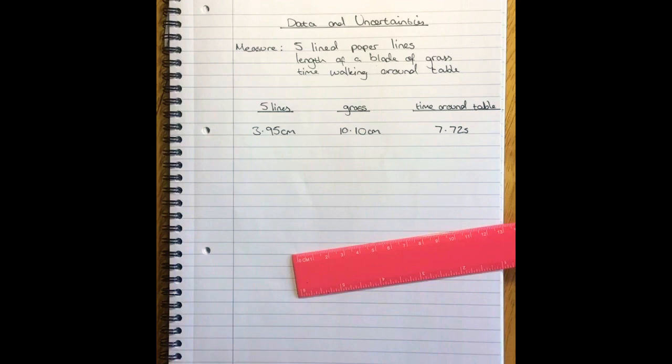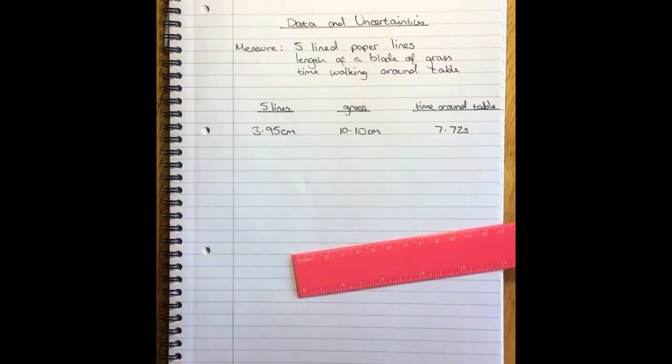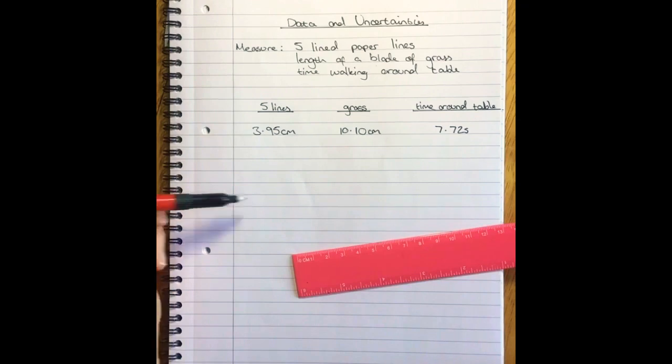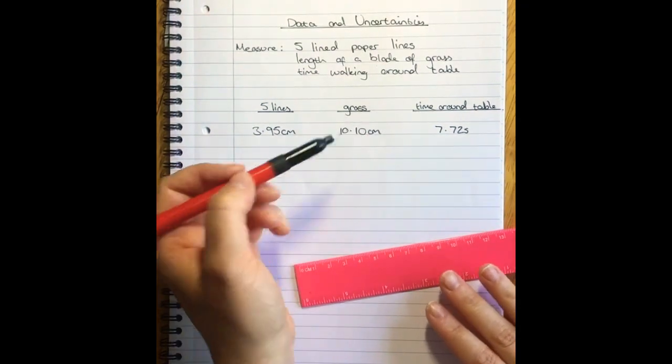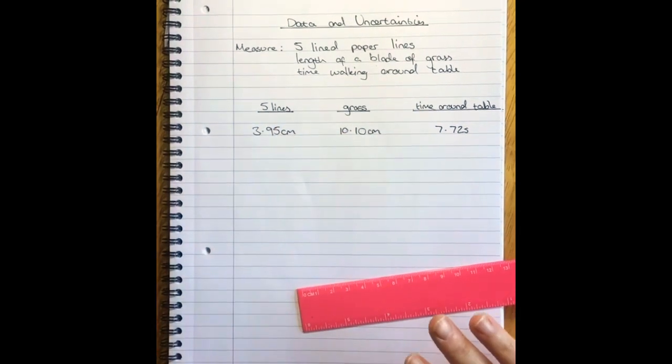So I am indeed leading up to this, folks. You are going to go away and you are going to repeat those measurements another four times each so that you have five measurements of the same thing for these three different things. So go away and measure your height of your five lines another four times, the length of your blade of grass—I hope you've still got it, otherwise you can just get a new blade of grass and do it five times—and the time for whatever you timed.